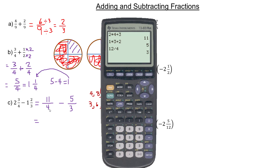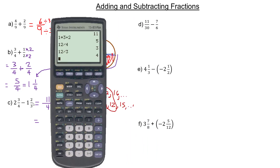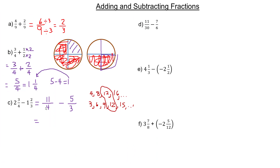Basically, I'm multiplying this one top and bottom by this denominator, and multiplying this one top and bottom by the other denominator. Sometimes the common denominator is actually the product of these — it's not always the case, but it happens a fair bit of the time. So I'm going to multiply by three: 11 times three is 33, and four times three is 12 in the denominator.